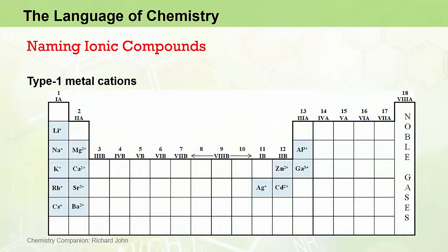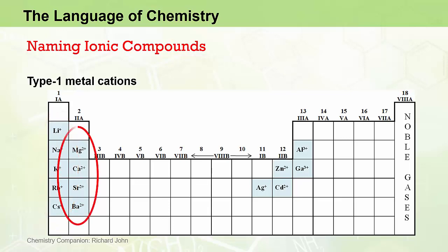Let's look at the type 1 metal cations first. This diagram shows the position of metals in the periodic table that form type 1 metal cations. The names of these ions are taken directly from the name of the metal, and the charge on these cations can be predicted directly from their position on the periodic table. All the group 1A metal cations have a 1+ charge, and the names of these ions are, from top to bottom: the lithium ion, the sodium ion, the potassium ion, the rubidium ion, and the cesium ion. The group 2A metal cations all have a 2+ charge, and their names are the magnesium ion, the calcium ion, the strontium ion, and the barium ion. The group 13 or group 3A metals have a 3+ charge, and they are known as the aluminium ion and the gallium ion.